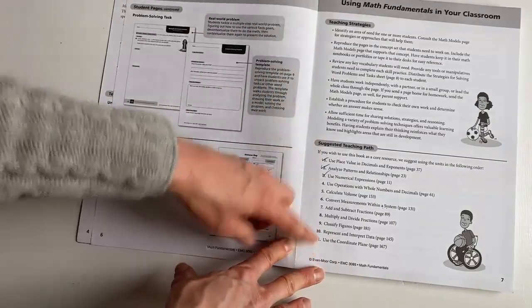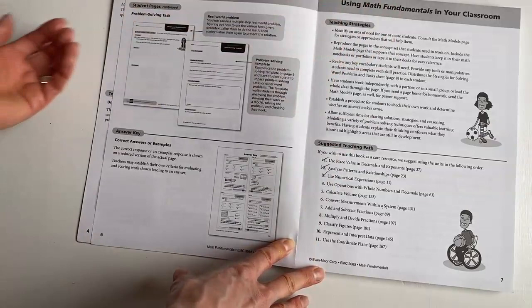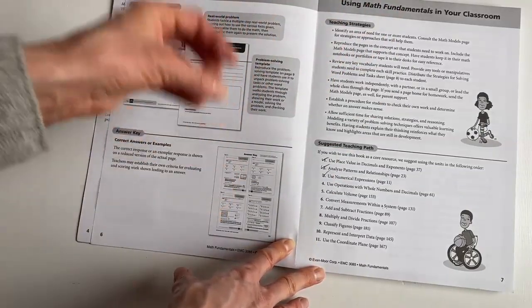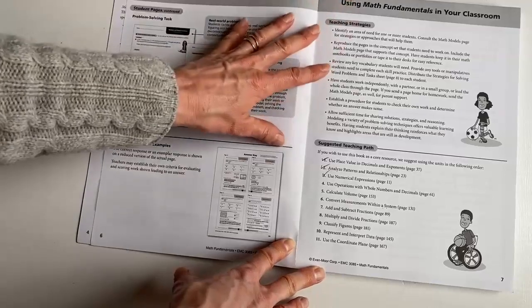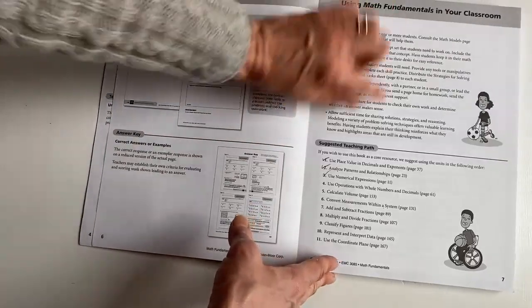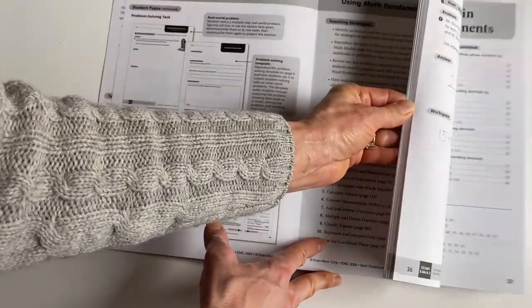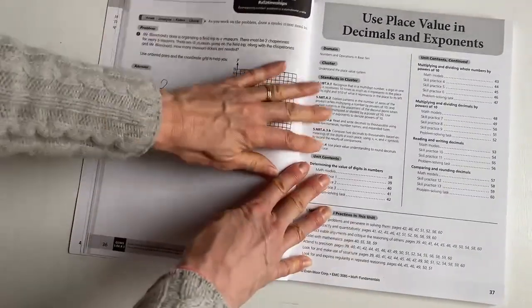And if it bothers your child to start in the middle of the book and then come back to the beginning, you could just tear out each unit and just staple it or paperclip it together and just not actually work in the workbook if that bothers them. Okay, so we would start here on page 37. So I'm gonna flip this over to show you. This is where we would start.